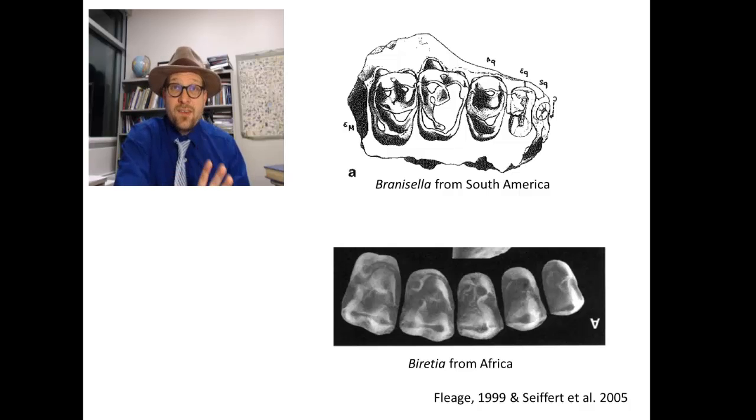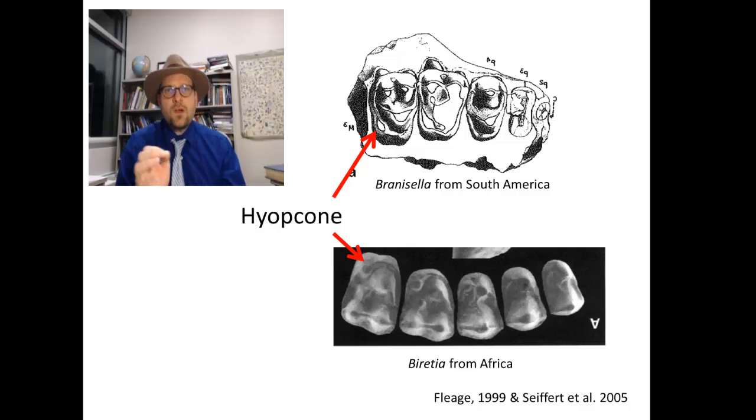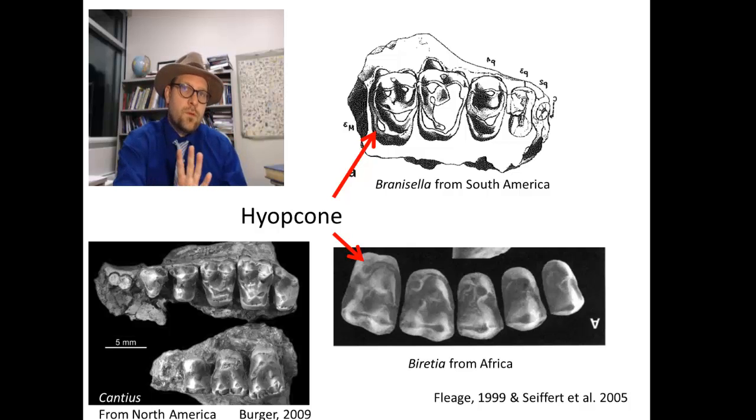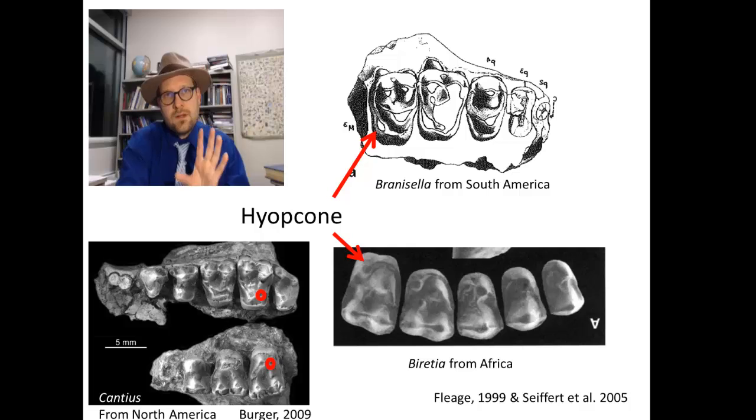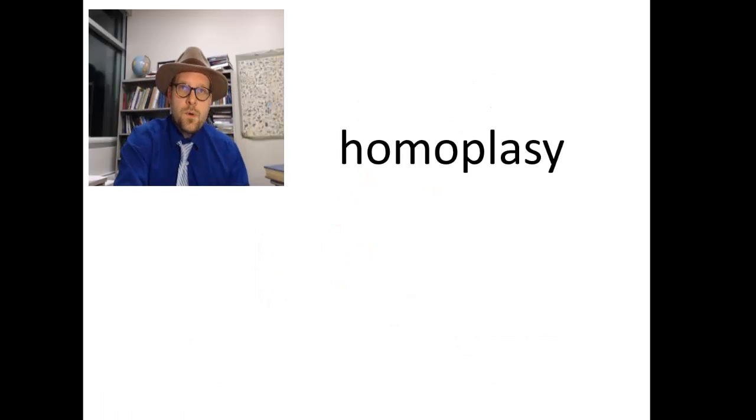Both fossils have an extra cusp posterior on the molars, called a hypocone. A hypocone is also found in other primates from the Eocene of North America, including a group called the Adapids, which appear to have formed an extra cusp of the hypocone without incorporating the outer shelf of the tooth, the cingulum. This indicates that the hypocone in North American Adapids is an example of convergent evolution, or what scientists call homoplasy.